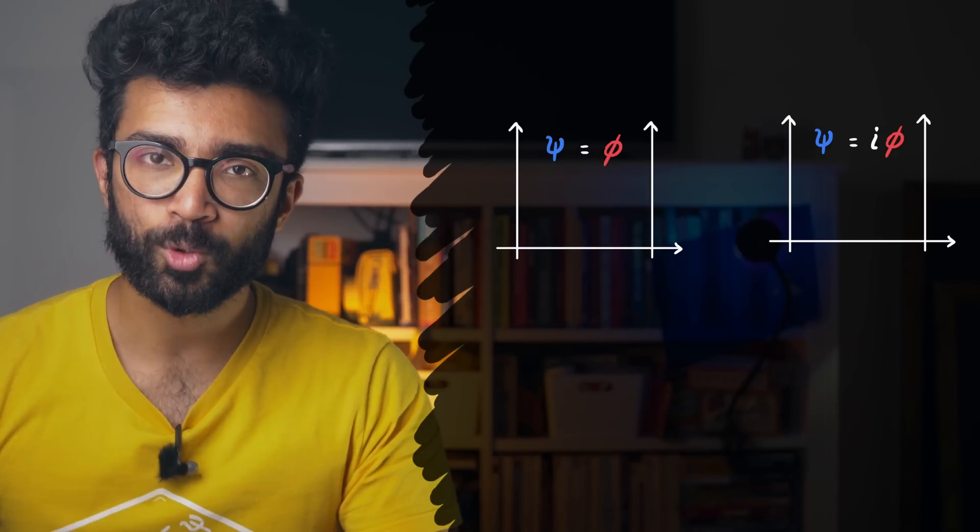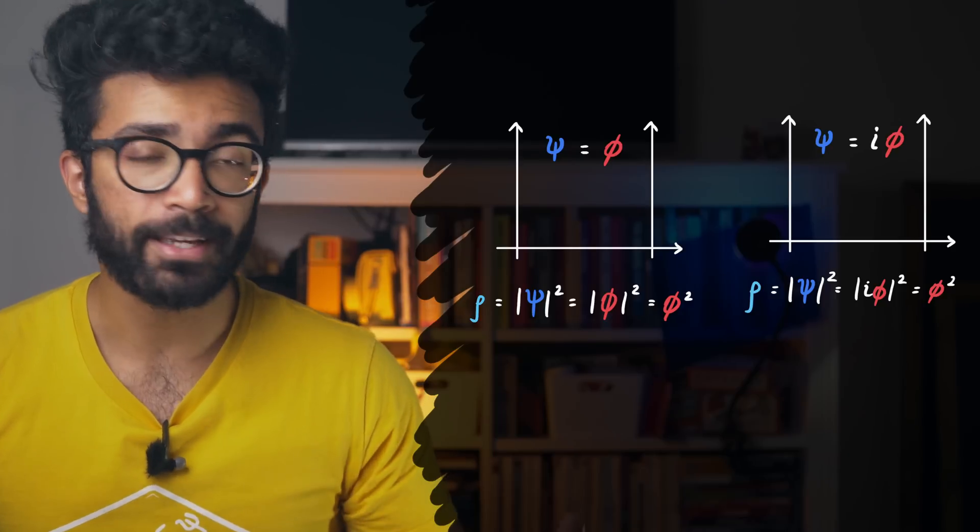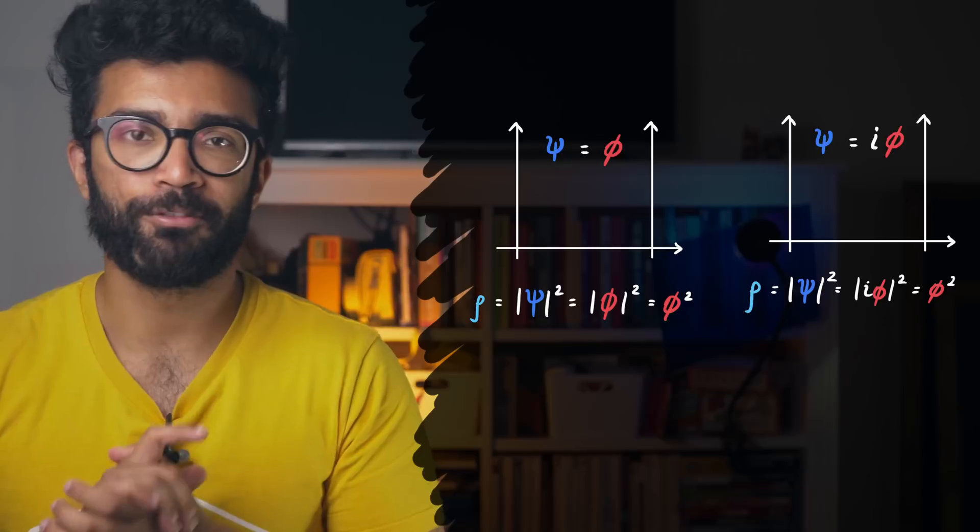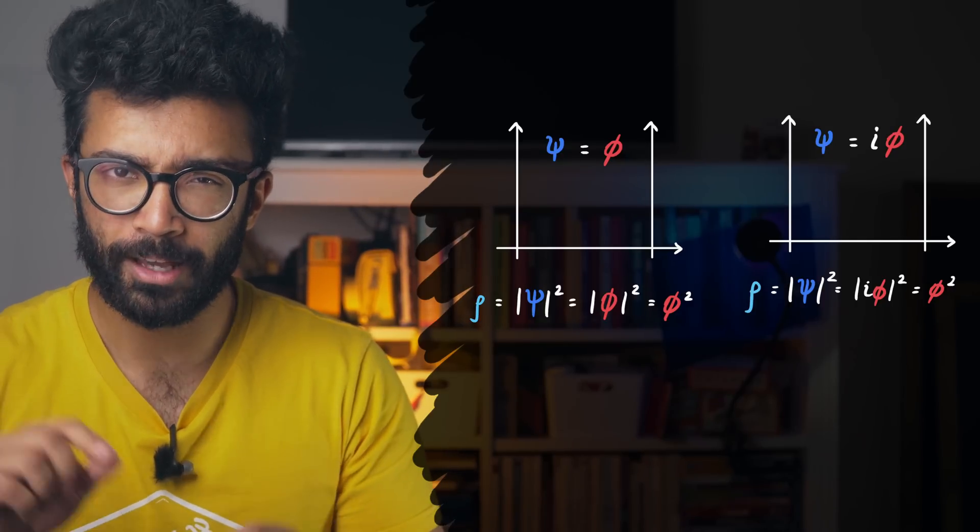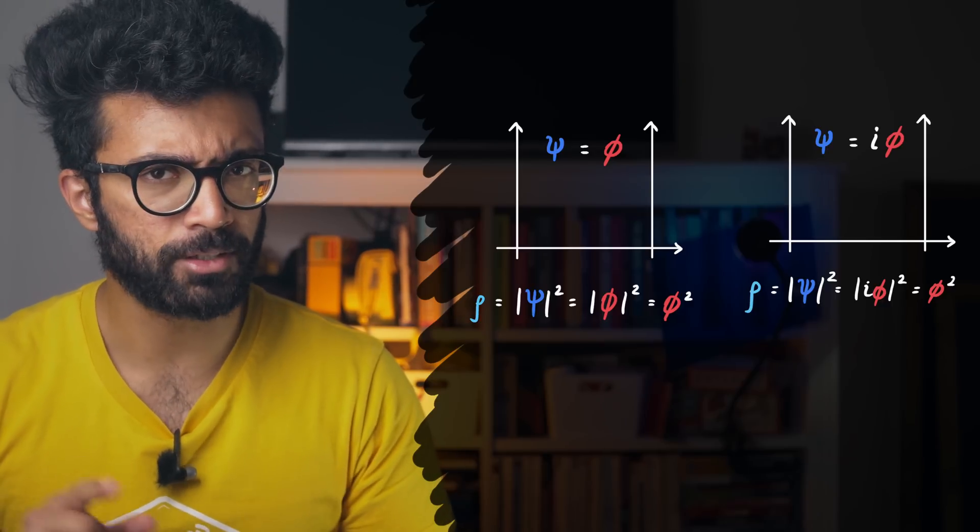Well, if we take the square modulus of these two wave functions, then we get the same thing, phi squared. This means that the probability distribution of both systems is exactly the same. But these systems are ever so slightly different to each other, because they actually have different wave functions.